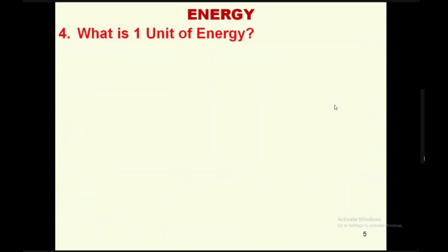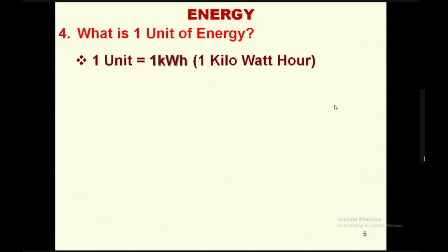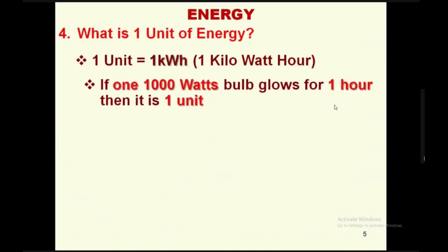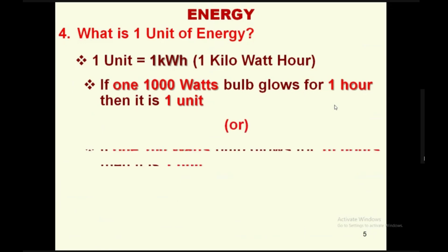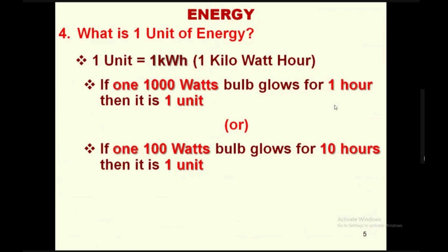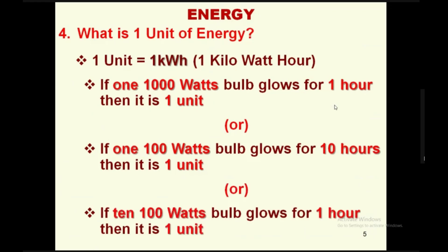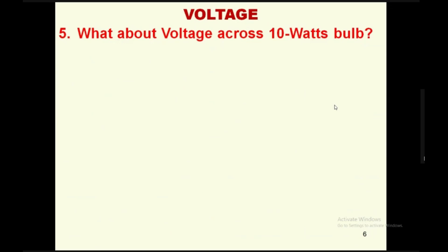What is one unit of energy? One unit is one kilowatt-hour. If a thousand-watt bulb glows for one hour, that is one unit. Similarly, if a hundred-watt bulb glows for 10 hours, that is also one unit. In 10 rooms, if 10 hundred-watt bulbs are glowing for one hour, that is also one unit.